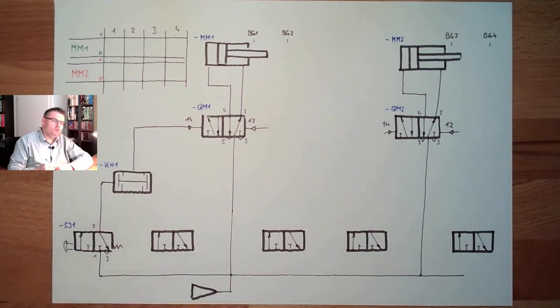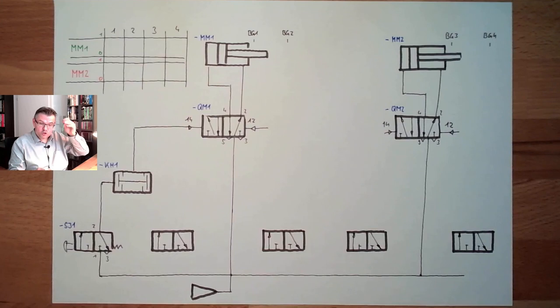I want that MM1 is some sort of clamping. So we are clamping an item. Then MM2 shall do something with this item. I don't know, make a hole, punch it, something like this. Do something with this item and then shall release.